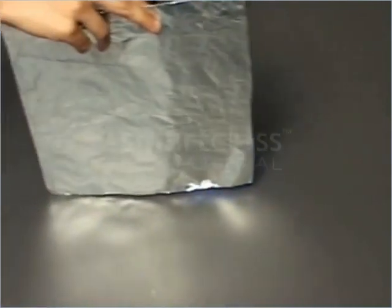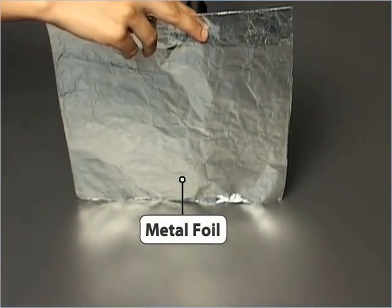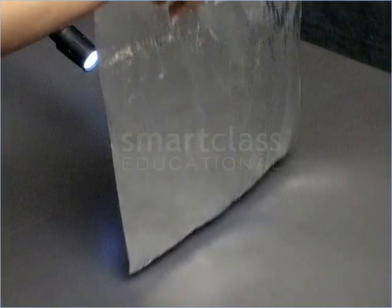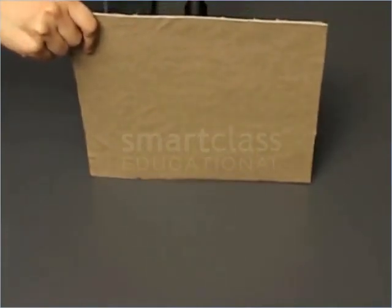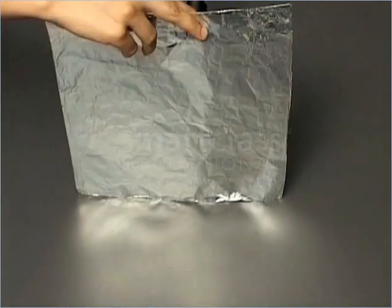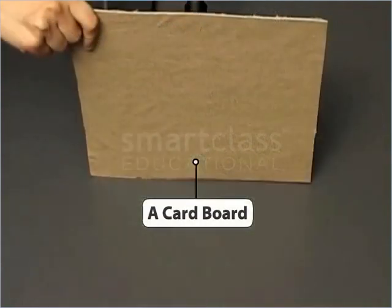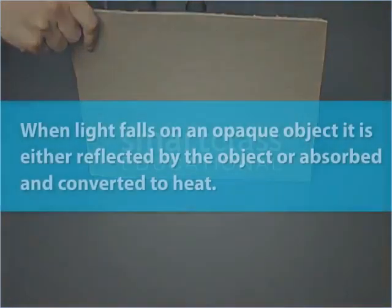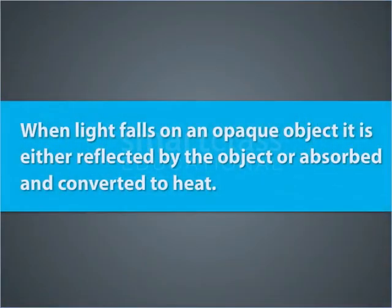Now take a metal foil and put it in front of the light source. The metal foil does not allow light to pass through it at all. Similarly, light does not pass through a cardboard sheet either. Metal foil and cardboard sheet are called opaque objects. When light falls on an opaque object, it is either reflected by the object or absorbed and converted to heat.